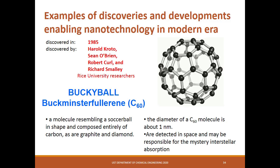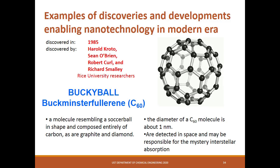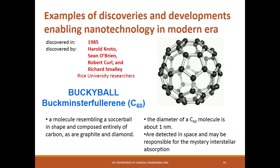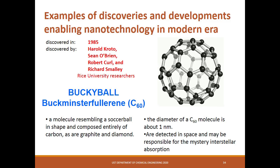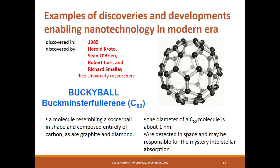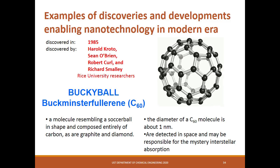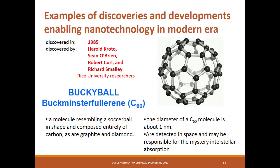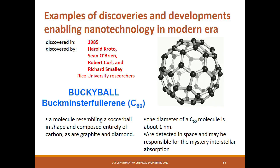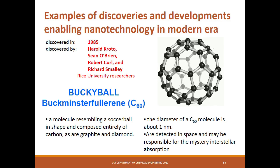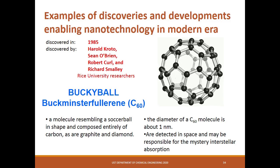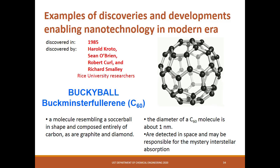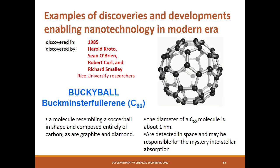Buckminsterfullerene, or buckyball, is a type of fullerene with the formula C60. It has a cage-like fused ring structure that resembles a soccer ball, made of 20 hexagons and 12 pentagons, where each carbon atom has three bonds. It is a black solid that dissolves in hydrocarbon solvents to produce a violet solution. Buckyball was first generated in 1984 by Eric Rohlfing, Donald Cox, and Andrew Kaldor using a laser to vaporize carbon in a supersonic helium beam. In 1985, their work was repeated by Kroto, Heath, Curl, and Smalley at Rice University, who recognized the structure of C60 as Buckminsterfullerene. Kroto, Curl, and Smalley were awarded the 1996 Nobel Prize in Chemistry for this discovery.